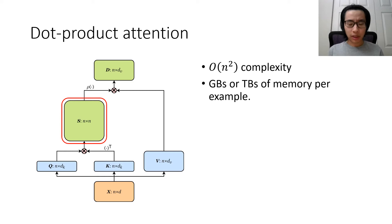However, that also means the complexity for memory and computation is order n squared for this module. This will translate to gigabytes or even terabytes of memory per example on high-resolution images or videos.